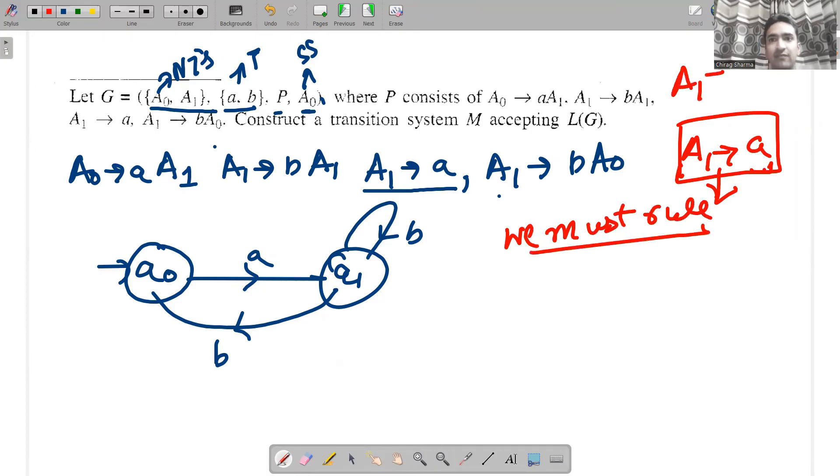Is this rule present? Obviously not. So I cannot say A1 given A goes to final state and A0 will be a final state. I cannot make this a final state because this rule is not present.